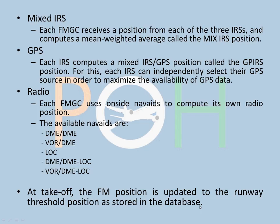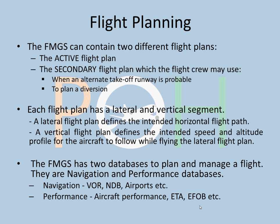In the MCDU you can set up a takeoff shift — if you are taking off from a taxiway intersection, it will update the FM position from that intersection point. There are two different flight plans: the active flight plan, which is the one you are currently following, and the secondary flight plan, which the flight crew may use to set an alternate takeoff runway, plan a diversion, or handle engine-out procedures.